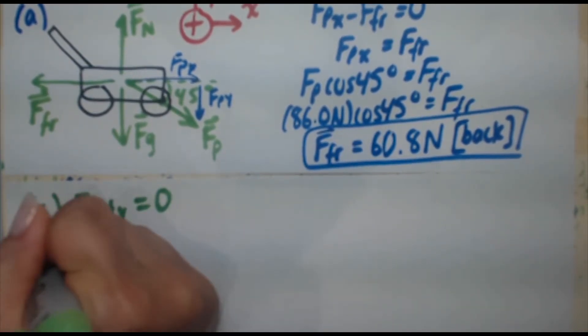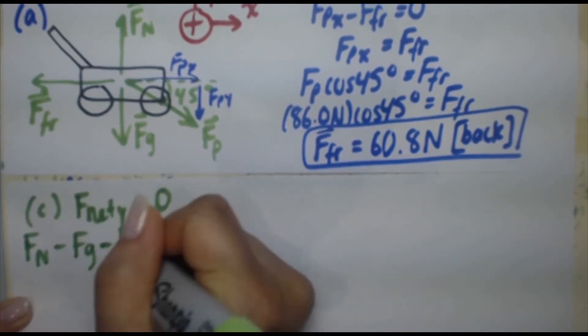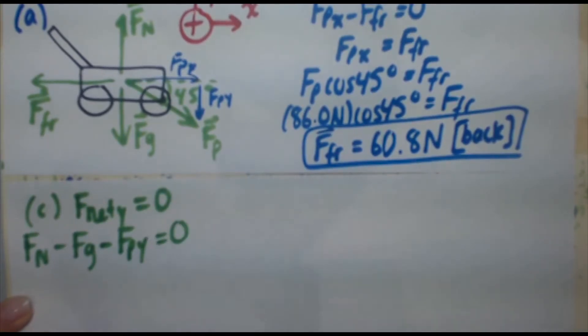Okay, now we've got fn in the positive direction, we've got fg in the negative, and we've got fpy in the negative. So that equals zero. Let's bring these two forces to the right. So I'm going to scroll this up a bit.